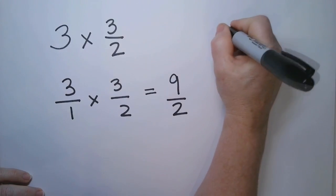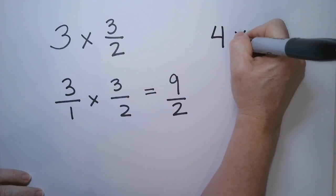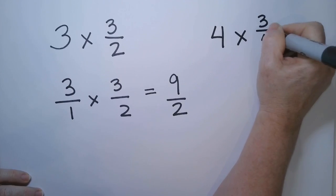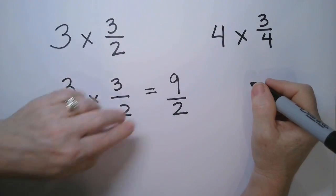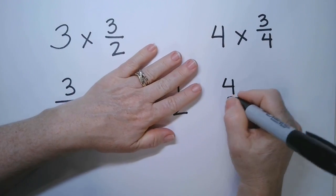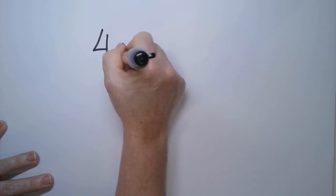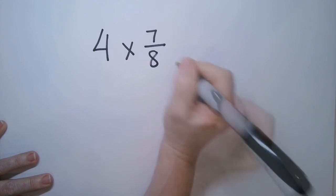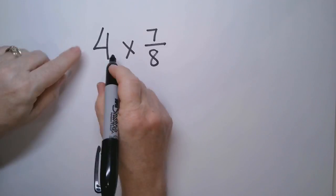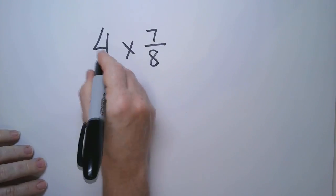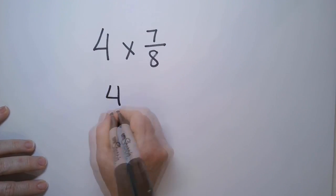Okay, let's try another one. How about 4 times 7 eighths? So we are going to multiply the top and the bottom, but first let's turn that 4 into a fraction.